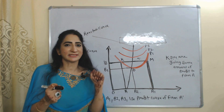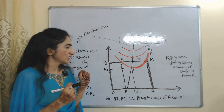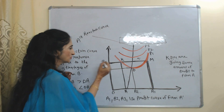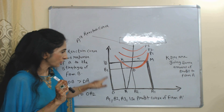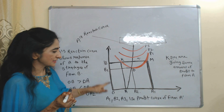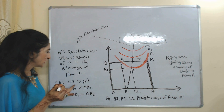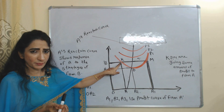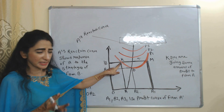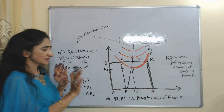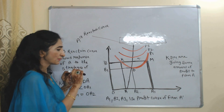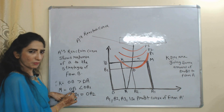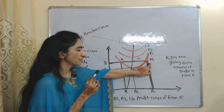The reaction curve of firm A tells us the response of firm A to the strategy of firm B. We have three points: K, D, and M. At point K, firm B is taking price OB and firm A is taking price OA. OB is more than OA, meaning at point K, firm B is taking a higher price compared to firm A. At point M, firm B is taking the same price OB but firm A is taking price OA1, and OA1 is more than OB.